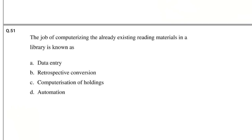Question number 50: The job of computerizing the already existing reading materials in a library is known as — options: Data entry, Retrospective conversion, Computerization of holdings, Automation. The answer is Retrospective conversion.